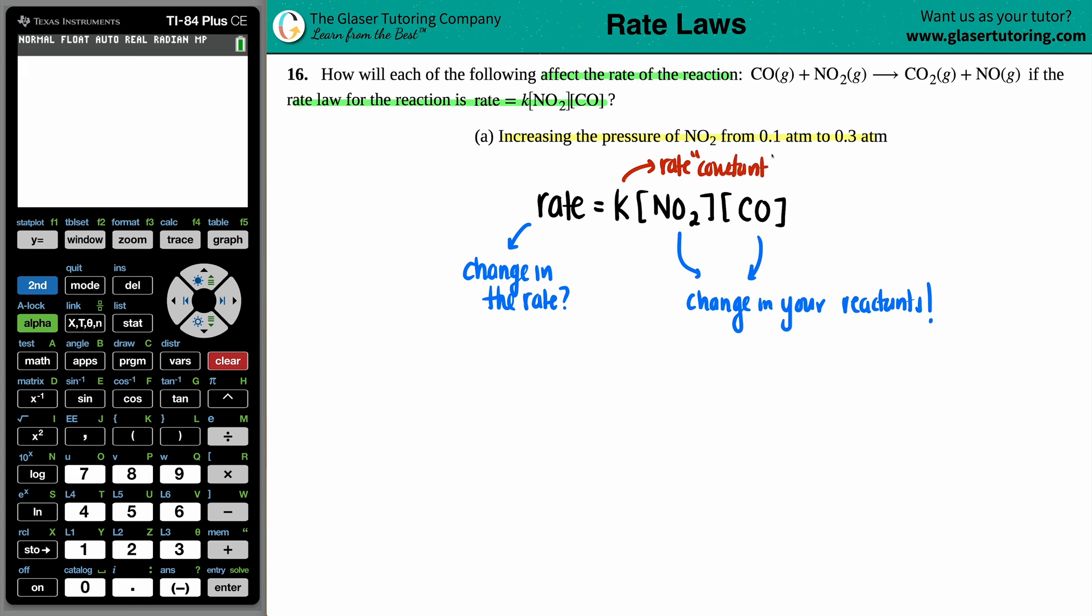Now a k value is the rate constant for any given equation. The rate constant, like it says, is a constant value, so it will never change whether you change your concentrations or not. If we're doing these types of changing concentration problems, the k value we don't really care about, so you can basically get rid of it.